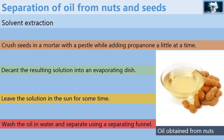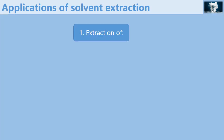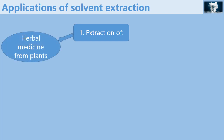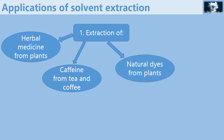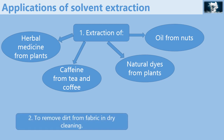The picture here shows some oil that has been obtained from some ground nuts. The applications or uses of solvent extraction: first it is very important in the extraction of herbal medicine from plants. It can also be used in the extraction of caffeine from coffee and tea, extraction of natural dyes from plants, and separation of oil from nuts. Apart from that it can also be used to remove dirt from fabric in dry cleaning.